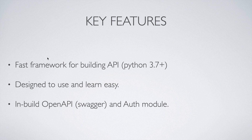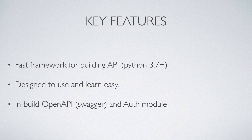As you can see, I've listed some key features. I'm calling it a fast framework for building APIs because when you go to build an API, you don't need to write extra code for OpenAPI, Swagger, or the auth module — and it is very easy to learn. When it comes to building API endpoints, say you're building a GET method and you want to pass some ID. In Flask you'd use headers and take data from a form or from JSON data.